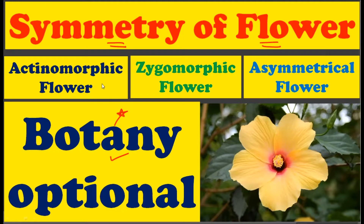In this symmetry, we are going to see the actinomorphic flower, then zygomorphic flower, and then the asymmetrical flower. As you may be familiar with the syllabus of Botany Optional for the UPSC examination, there is angiosperm systematics. So before studying angiosperm systematics, you should have cleared all the concepts related with the flower of an angiosperm.